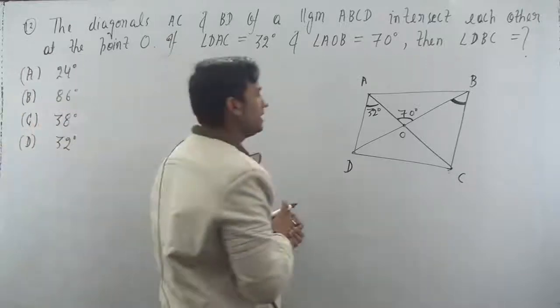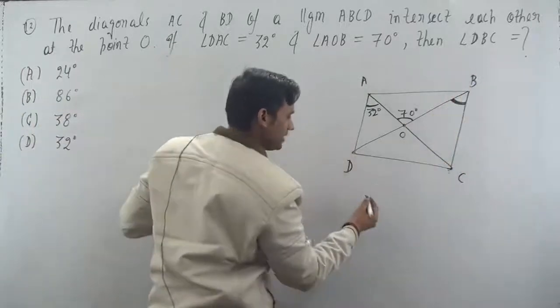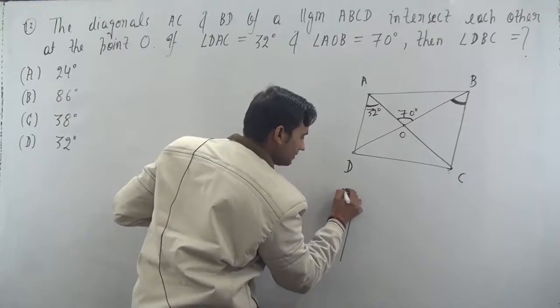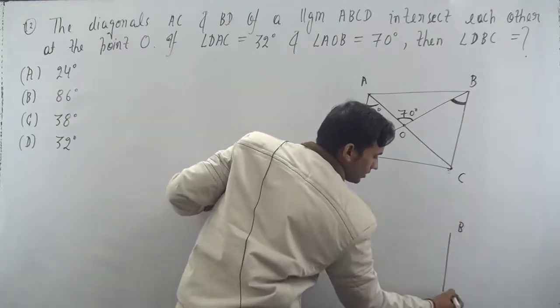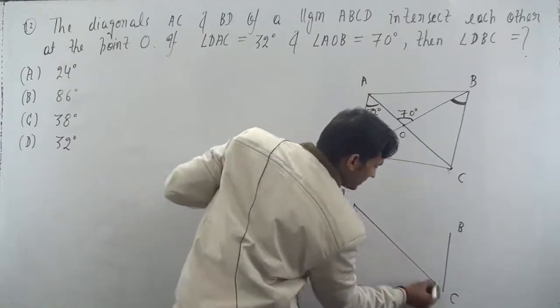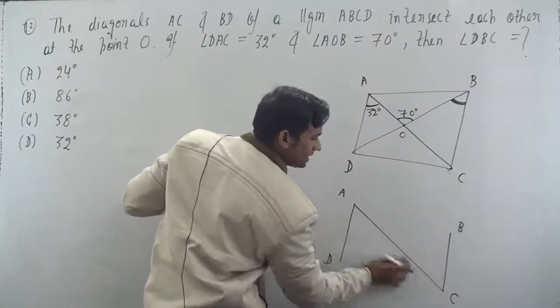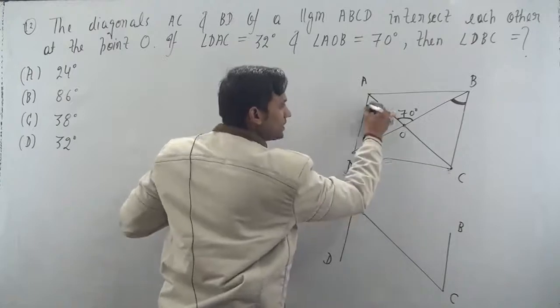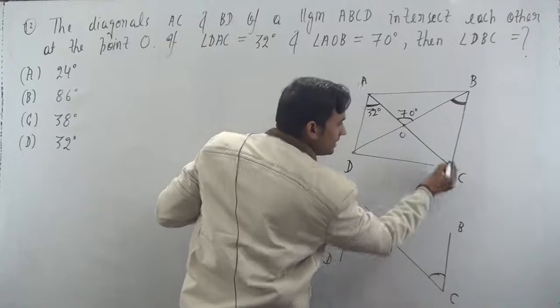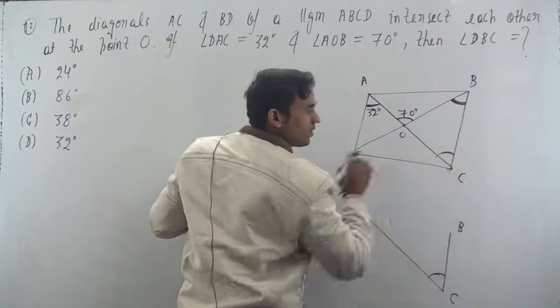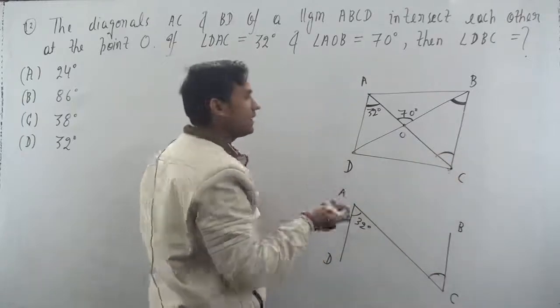Now, if you clearly see, this AD is parallel to BC like this. Now this is a transversal line. So AC is a transversal line here. So this angle is 32 degrees. If this angle is 32 degrees, so this angle is also what? 32 degrees. Alternate interior angle. So this is 32, so this is also what? 32 degrees. Correct. Alternate interior angle.